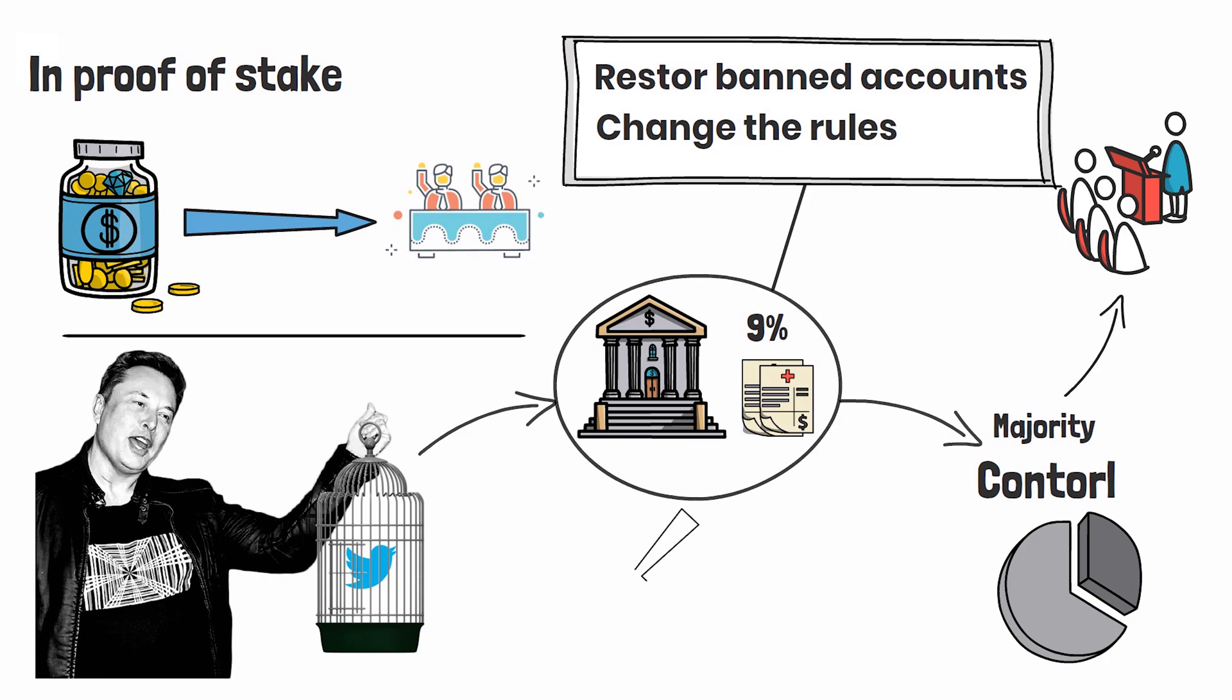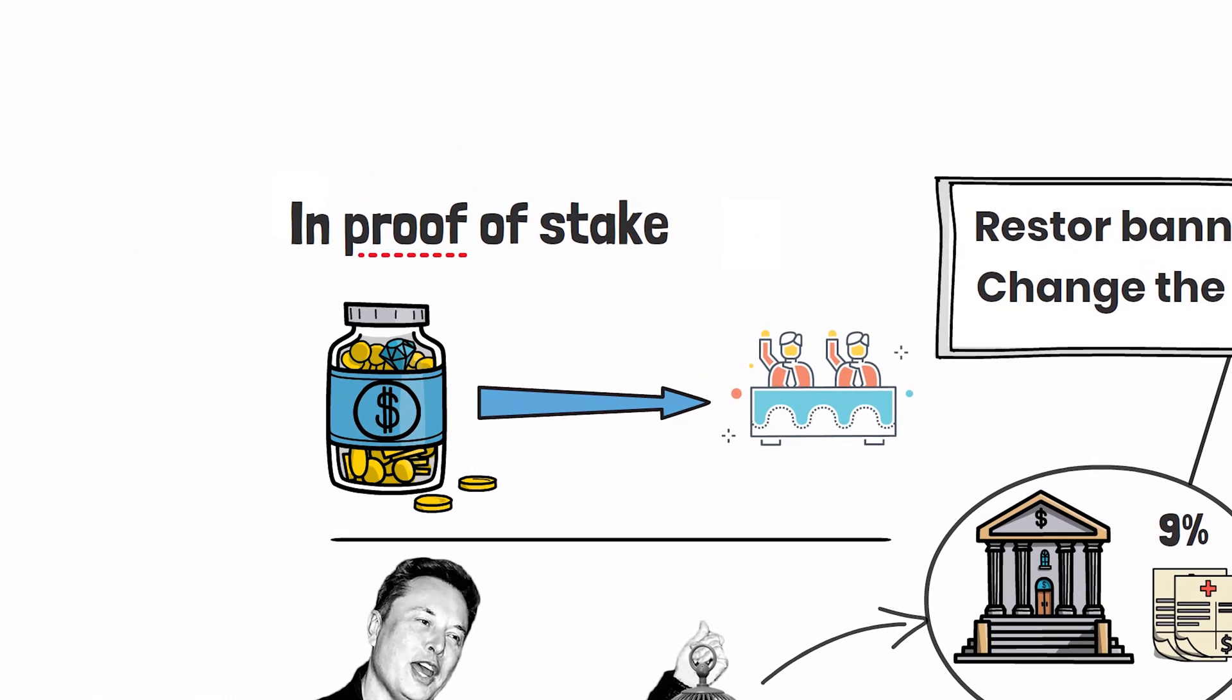Proof of stake blockchains are literally the exact same way. The amount of coins that you own dictates your voting power in the network.